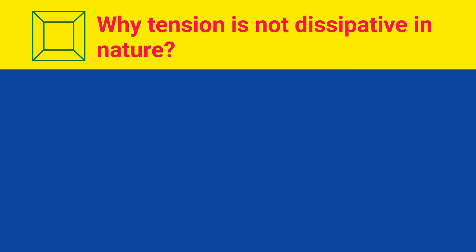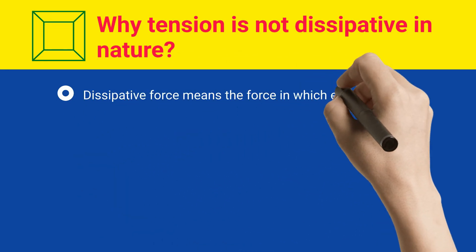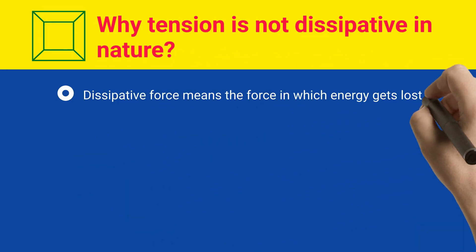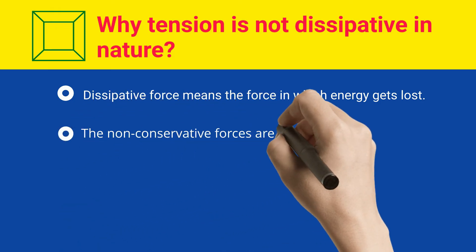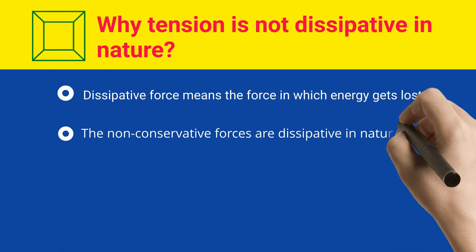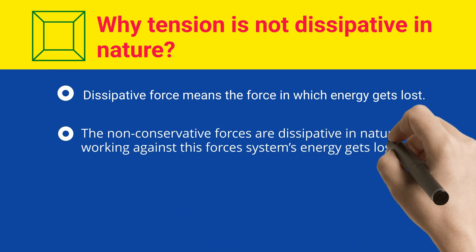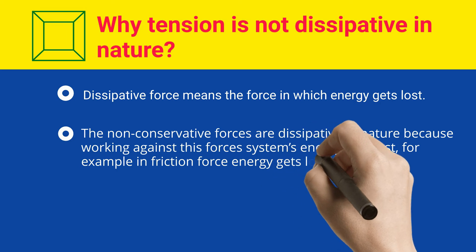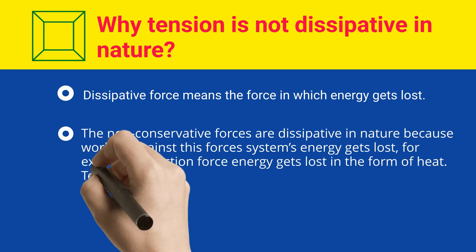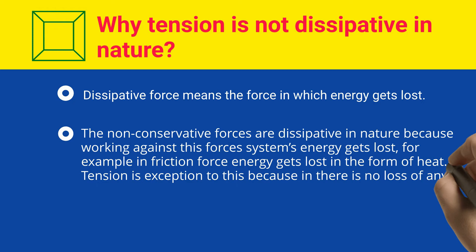Why is tension not dissipative in nature? Dissipative force means a force in which energy gets lost. Non-conservative forces are dissipative in nature because working against these forces causes the system's energy to be lost — for example, in friction, energy is lost as heat. Tension is an exception because there is no loss of energy in the tension force.